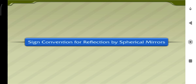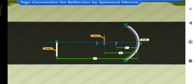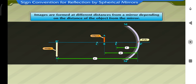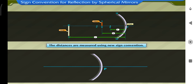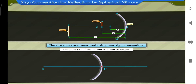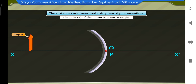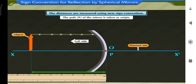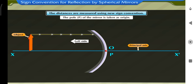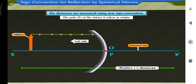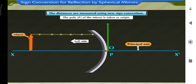Sign convention for reflection by spherical mirrors: images are formed at different distances from a mirror depending on the object distance, and these distances are measured using the new sign convention. The pole P is taken as the origin; the principal axis is taken as the x-axis. The object is always placed to the left of the mirror, so light falls from the left. All distances parallel to the principal axis are measured from the pole. Distances to the right of the origin along the positive x-axis are positive; distances to the left along the negative x-axis are negative. Distances measured perpendicular to and above the principal axis are taken as positive.